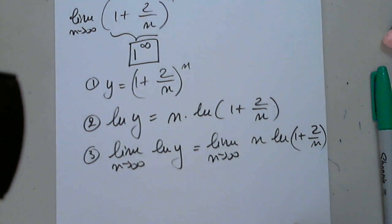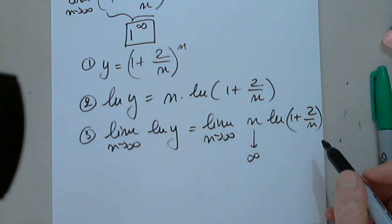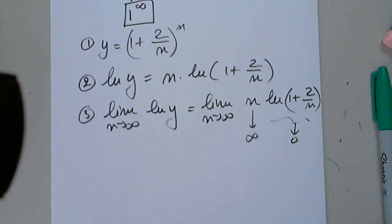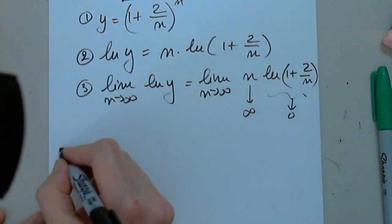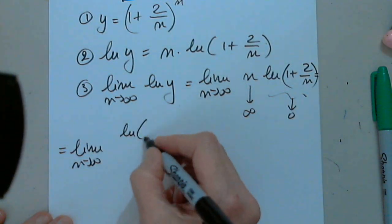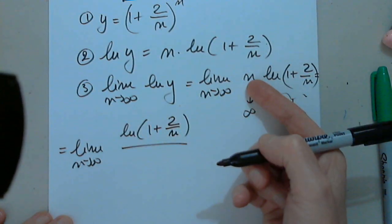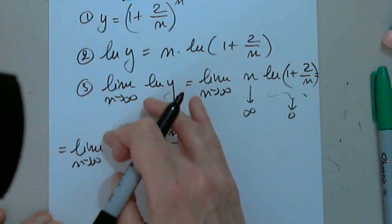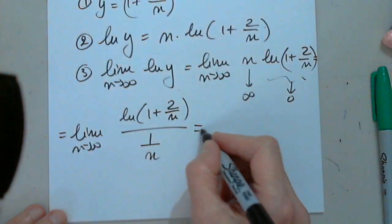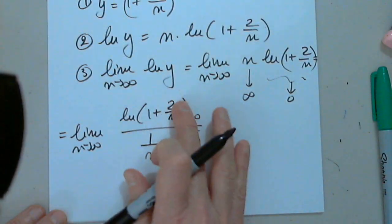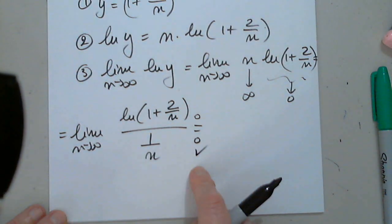I see that n approaches infinity and natural log of 1 approaches 0, so again I have 0 times infinity — an indeterminate case requiring L'Hôpital's rule. But it's not applicable yet. A simple algebraic manipulation: leave natural log alone and change n over 1 into 1 over (1/n). Now this is 0 over 0, perfect for L'Hôpital's rule. When n approaches infinity, both numerator and denominator approach 0.